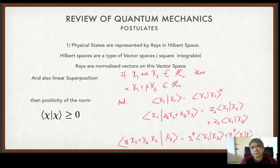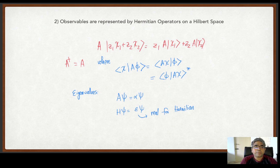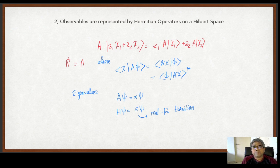Since we have come to energy levels, let us go to the second postulate, which is essentially about observables. Observables are represented by Hermitian operators on Hilbert space. An operator is something which acts on a linear vector in the Hilbert space — it takes chi1 back to another vector within H₀. These operators are required in quantum mechanics to be linear: if they act on a linear combination z1*chi1 + z2*chi2, then z1 comes out and A acts on chi1, and z2 with A acts on chi2.